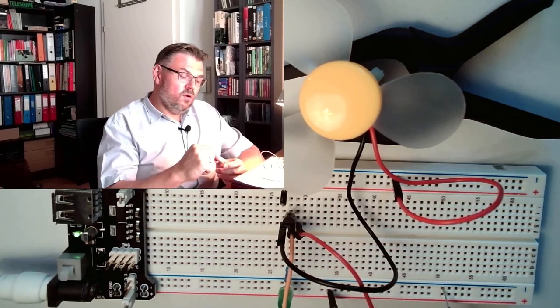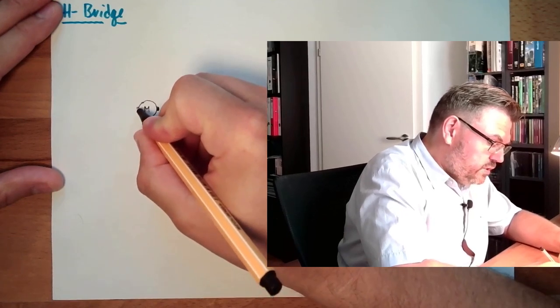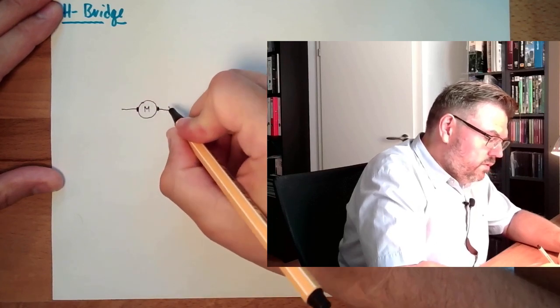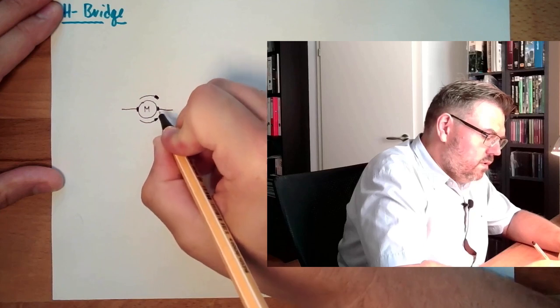We have an H-bridge, this is this L293D motor driver. We have a look how this is working. So an H-bridge is what we need. What is an H-bridge? Well, let's start. I will draw simply here the motor, this is the sign of a motor, two connections of the motor, and we want to have this motor turned this way or this way. In both ways, it should be possible.